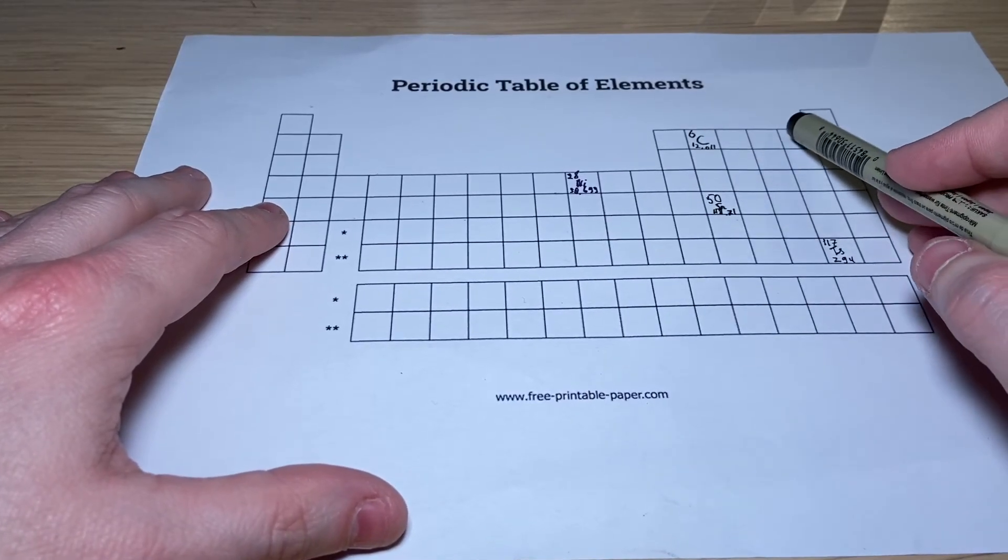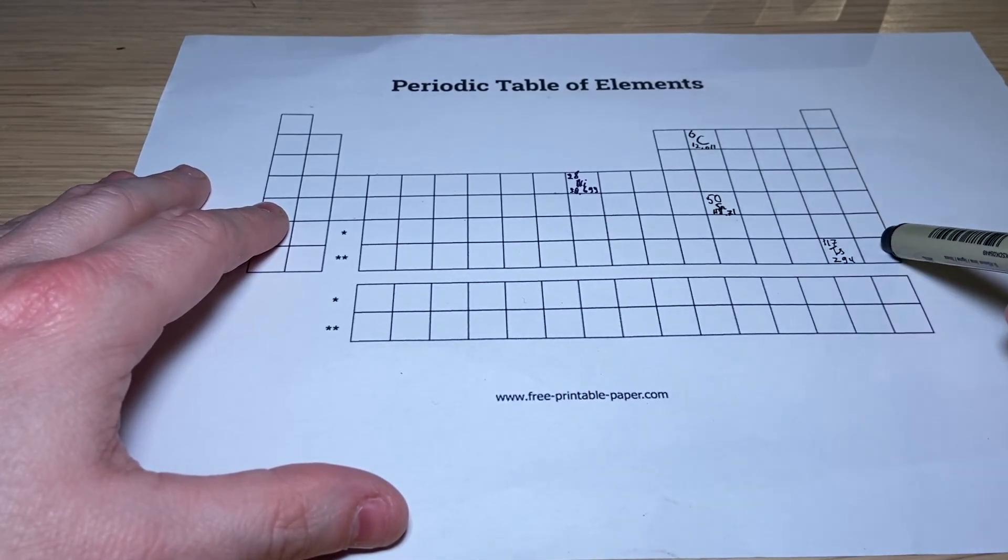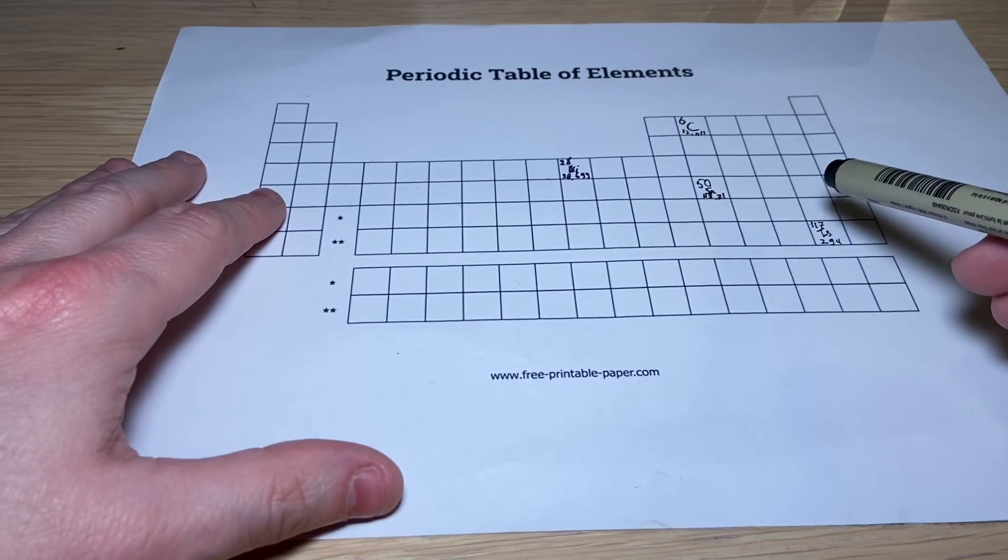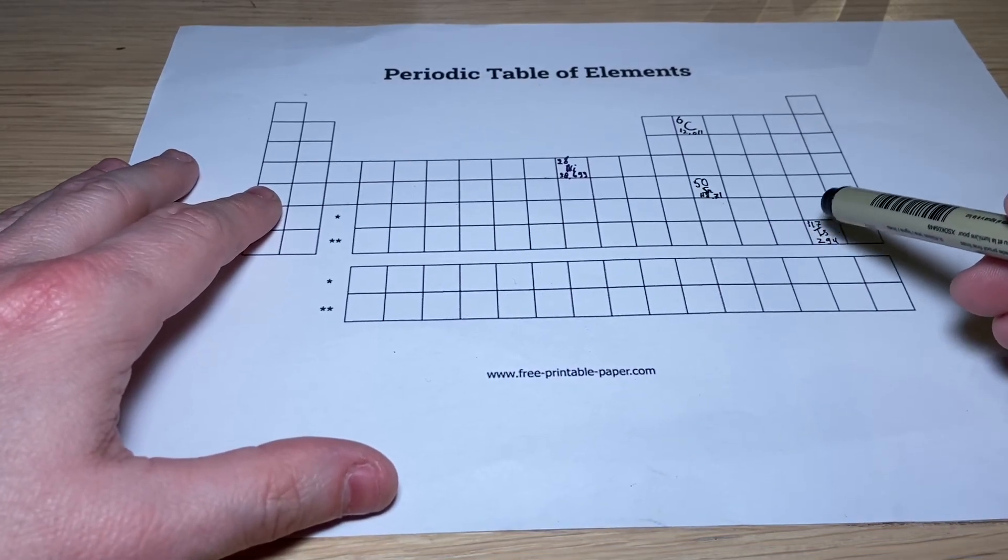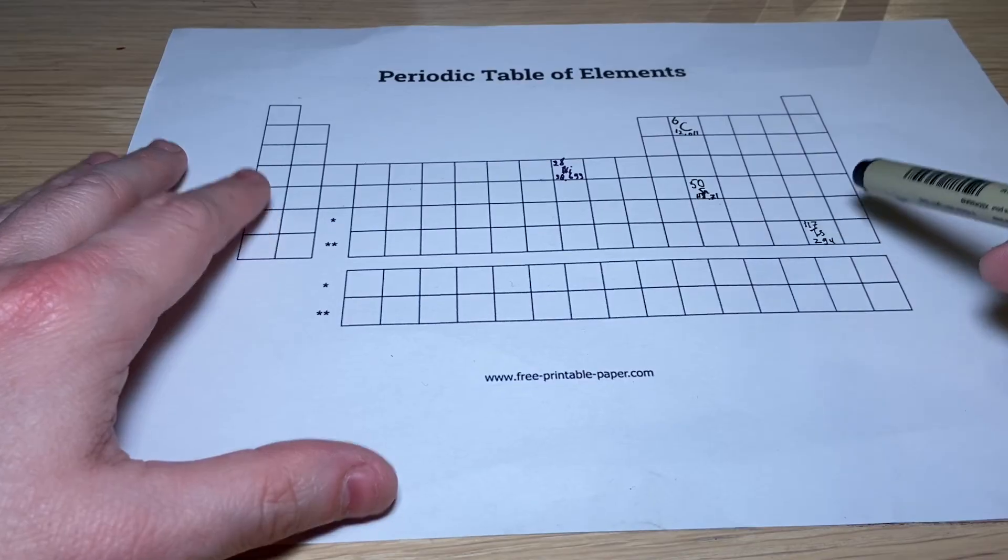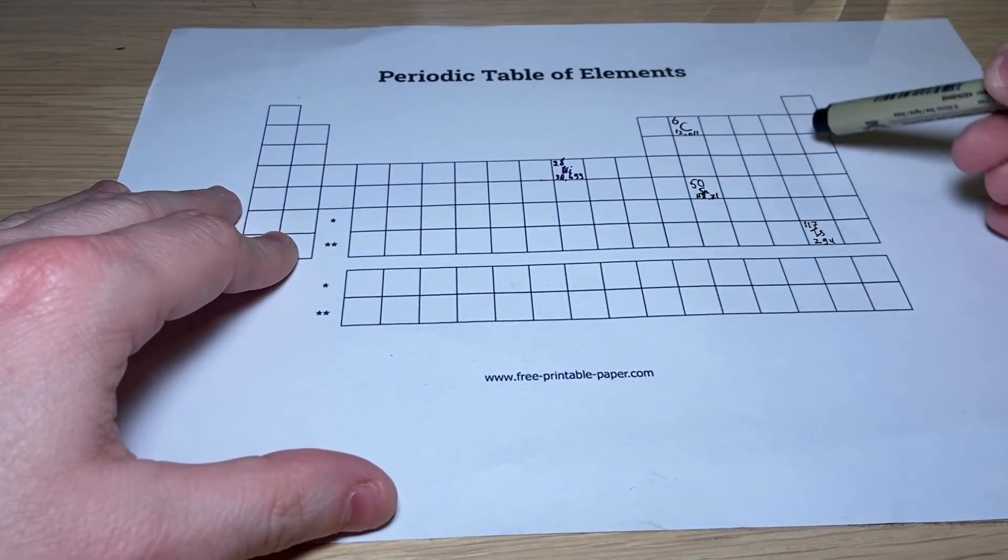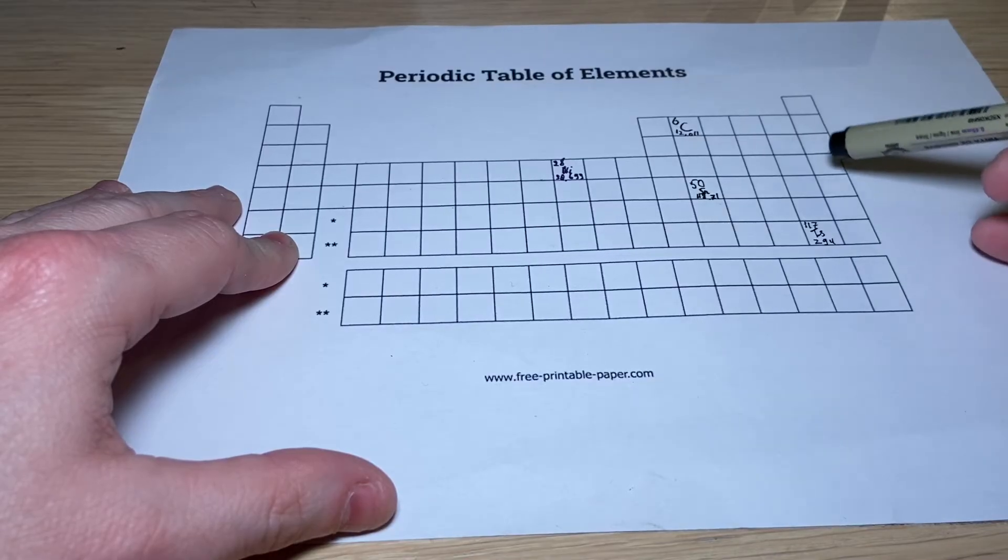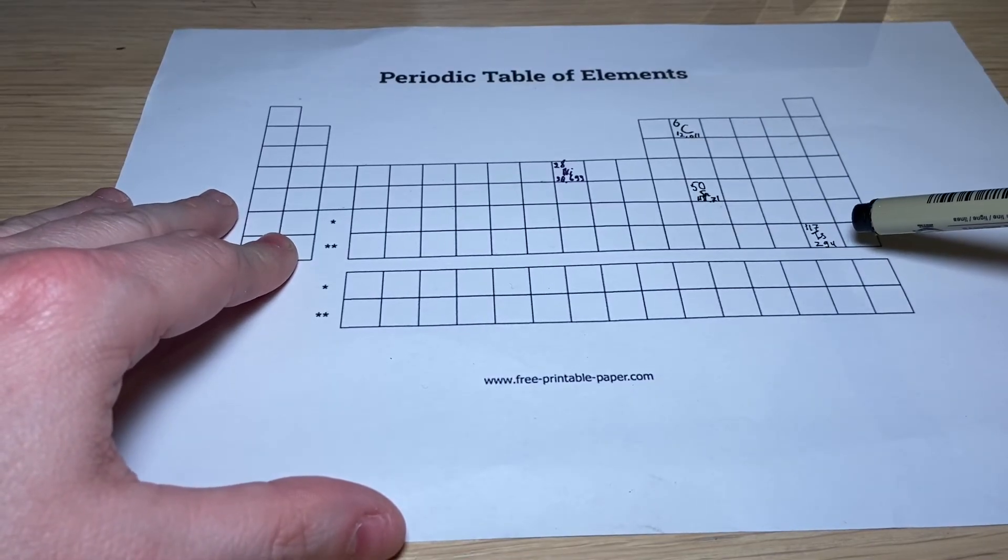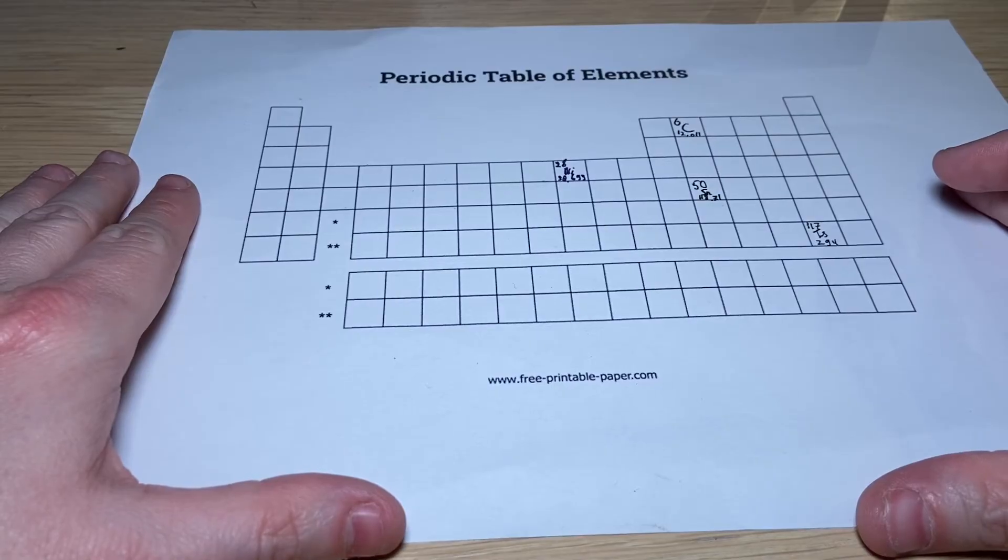Now, these elements here in group seven, they are almost there. And they would do anything to get an electron and fill their, so to say, bookshelf or their electron shelf to get to that perfect configuration and be almost like a noble gas.